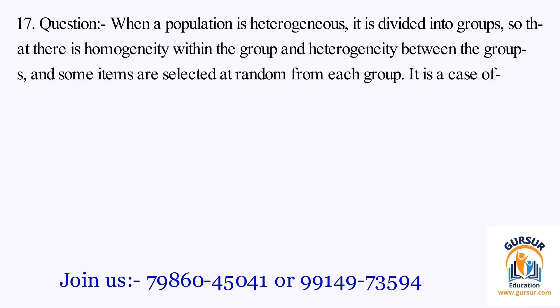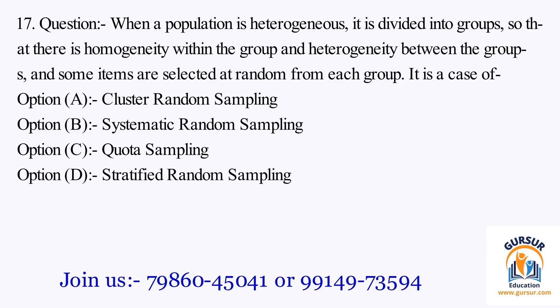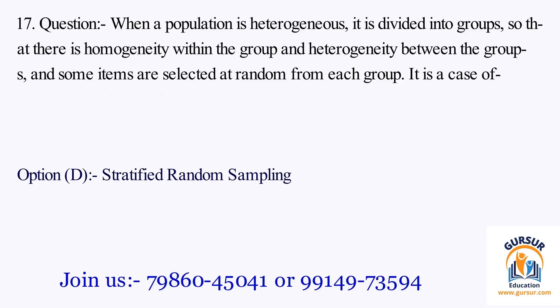Question number 17. When a population is heterogeneous, it is divided into groups so that there is homogeneity within the group and heterogeneity between the groups, and some items are selected at random from each group. It is a case of: Option A: cluster random sampling. Option B: systematic random sampling. Option C: quota sampling. Option D: stratified random sampling. The right answer is Option D, that is stratified random sampling.